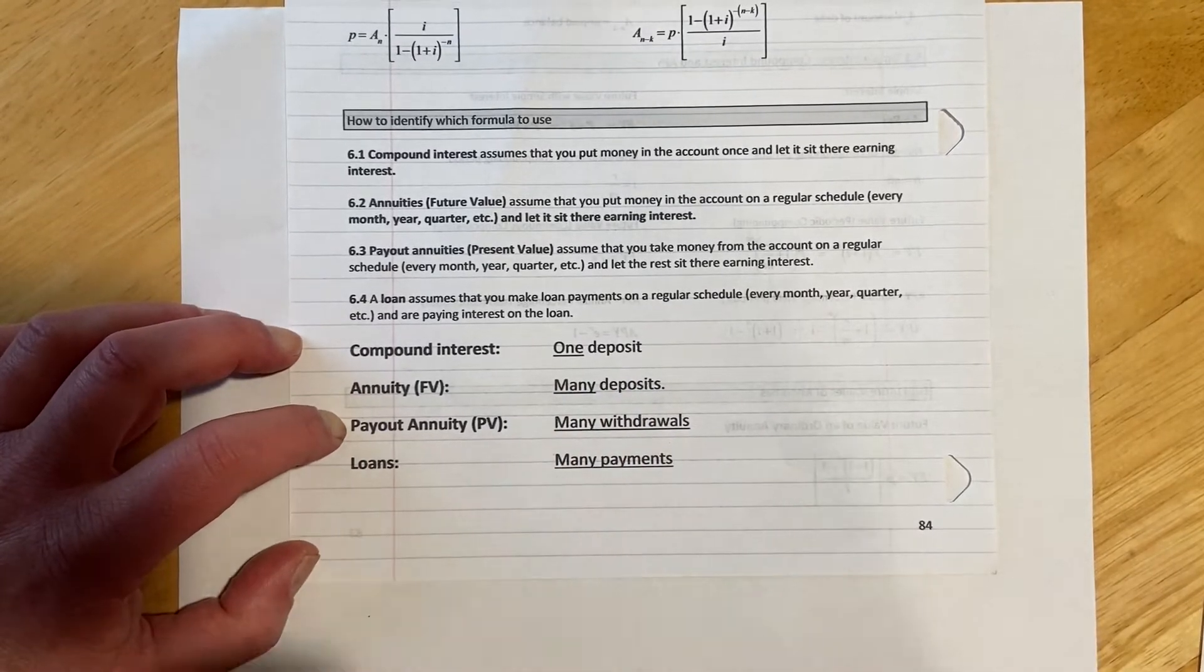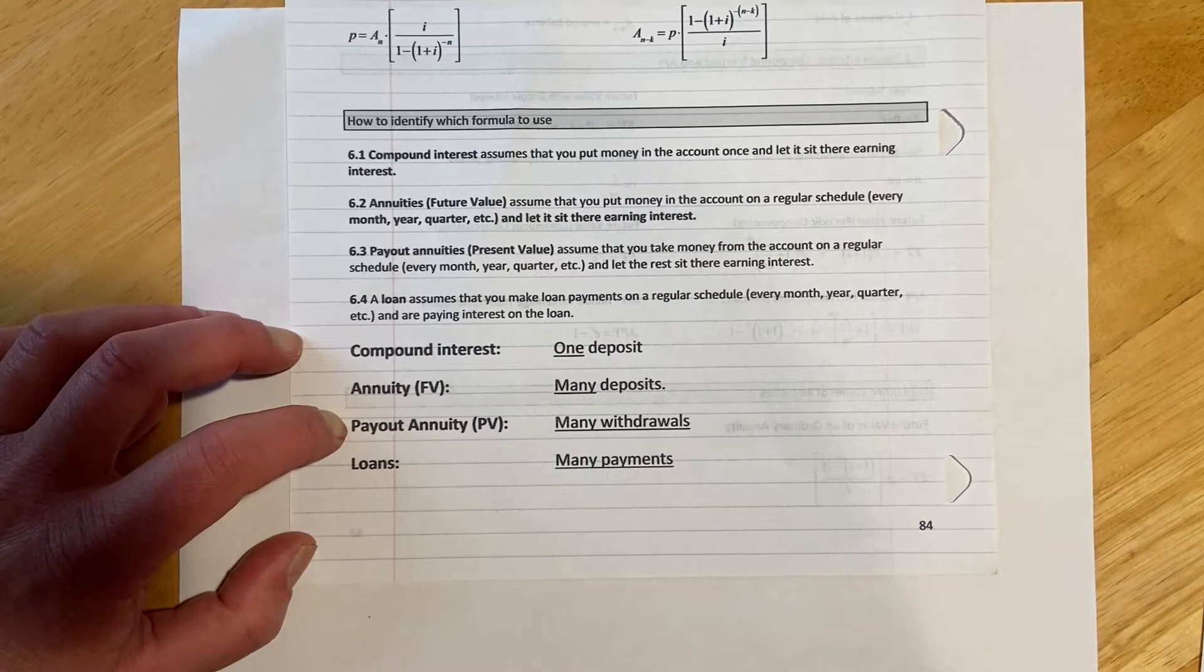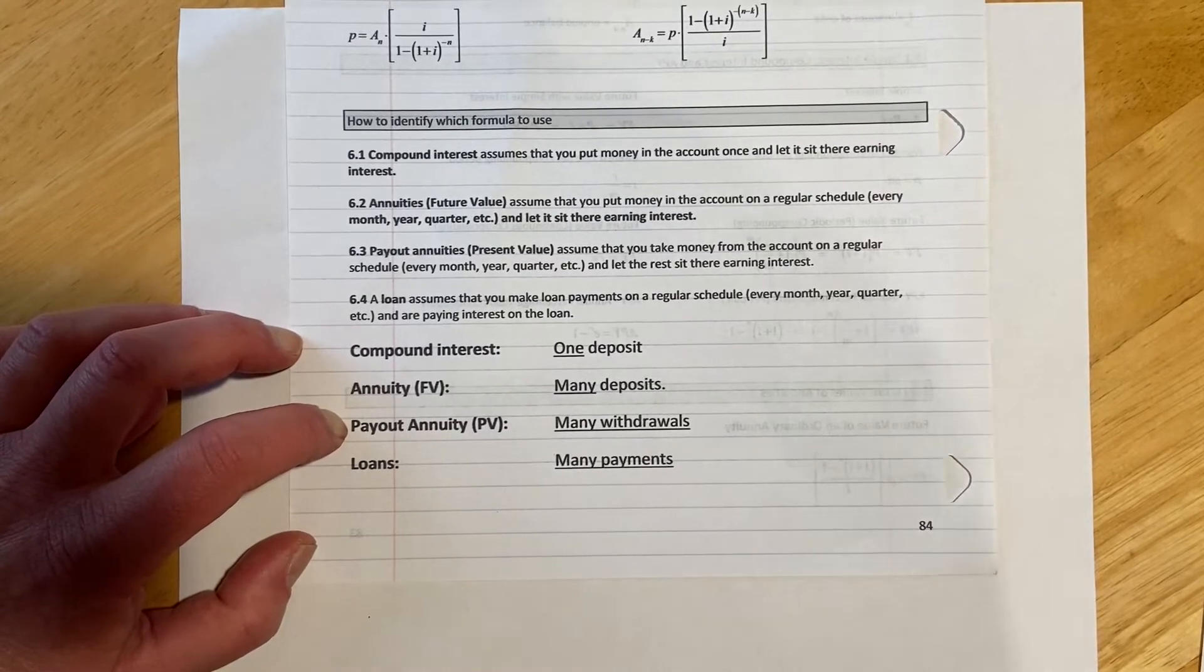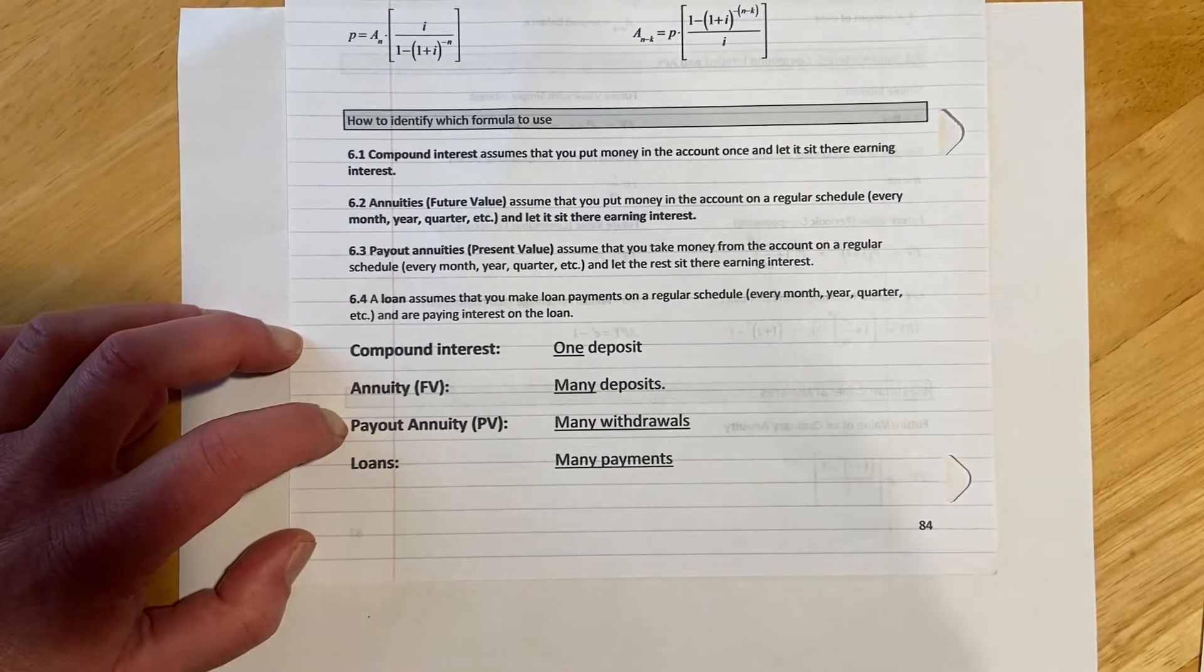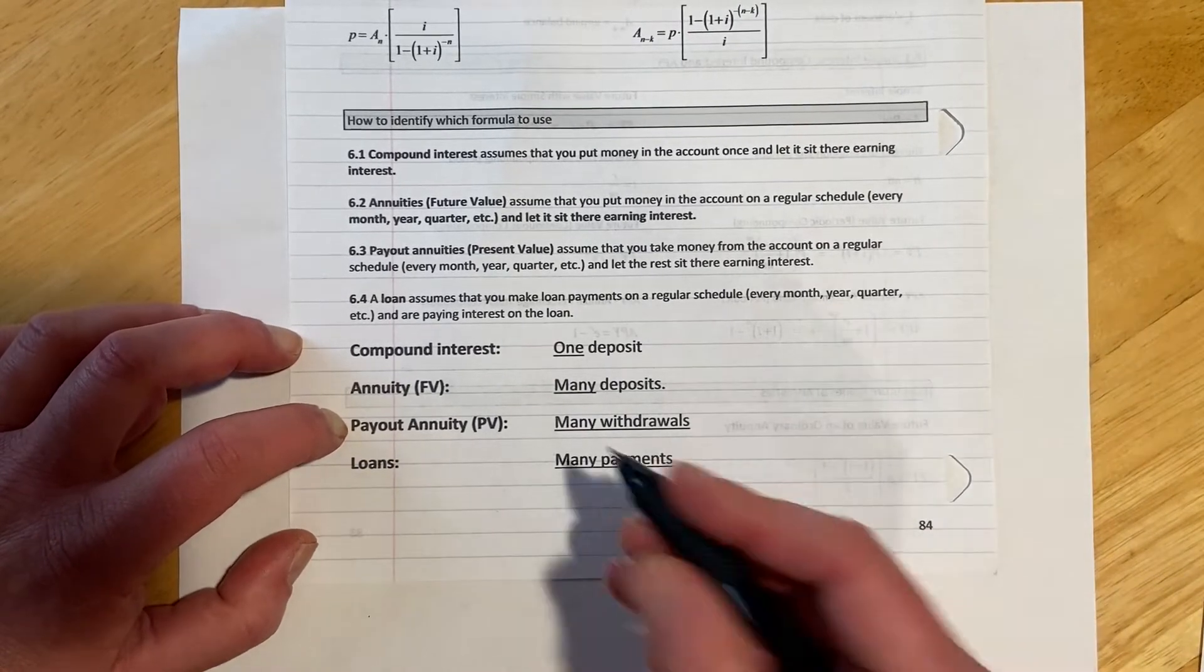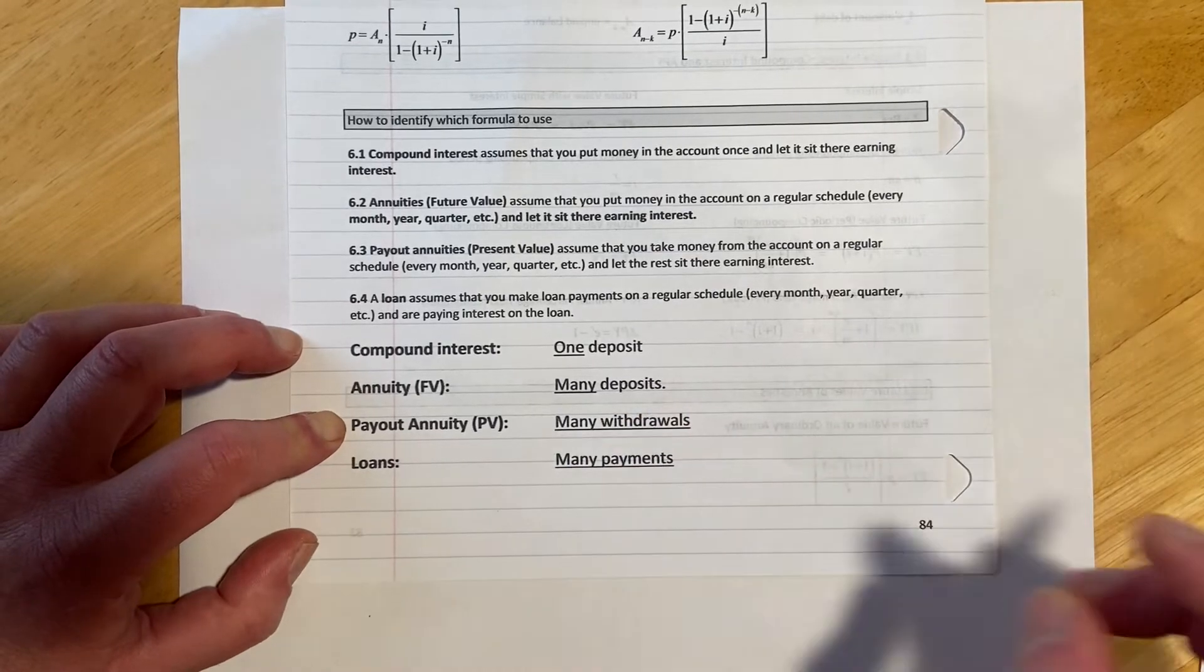A payout annuity, that's where we have a lump sum of money right now today, and then I want to live off that. So say I won the lottery, I have this award, and now I'm going to set up as an annuity so I get payments over time. So for that, that one's going to be many withdrawals, so you have the money, it's paying you.